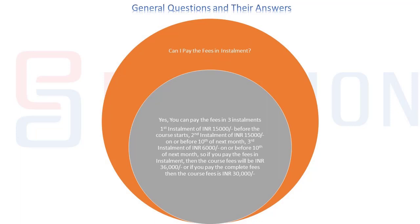Can I pay the fees in installments? Yes, you can pay in three installments: first installment of Rs. 15,000 before the course starts, second installment of Rs. 15,000 on or before the 10th of the next month, third installment of Rs. 6,000 on or before the 10th of the following month. If paying in installments, the total fees will be Rs. 36,000; if paying in full, the fees is Rs. 30,000.